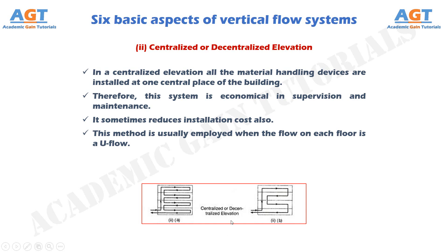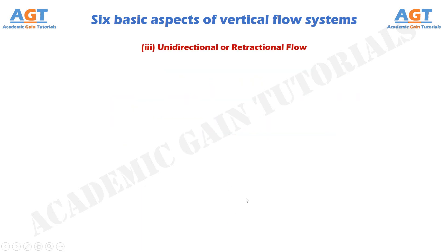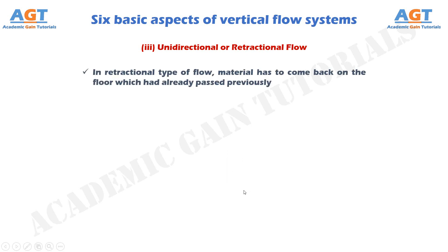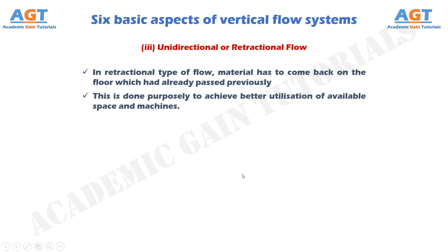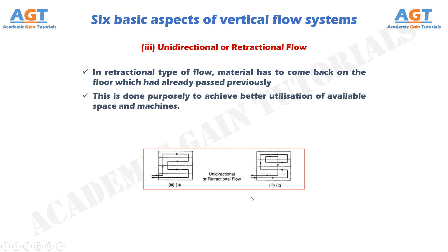Number 3: Unidirectional or retractional flow. All the horizontal flow patterns discussed earlier are examples of unidirectional flow, which is a one-way pattern. But in retractional type of flow, material which had already passed previously has to come back on the floor. This is done purposely to achieve better utilization of available space and machines. We can see unidirectional or retractional flow for vertical flow lines in these figures for a multi-storey factory facility.